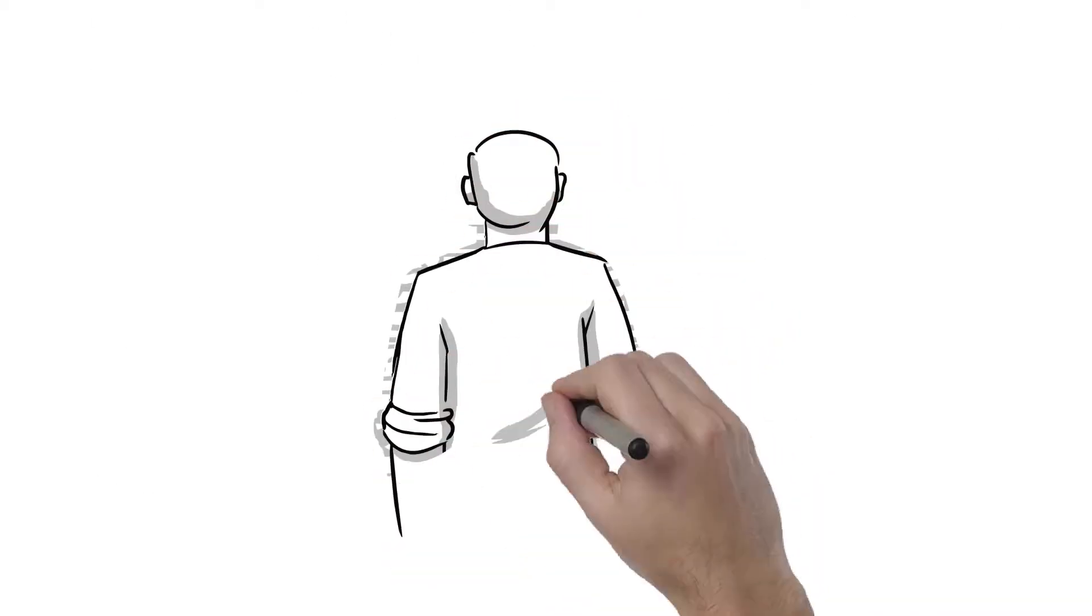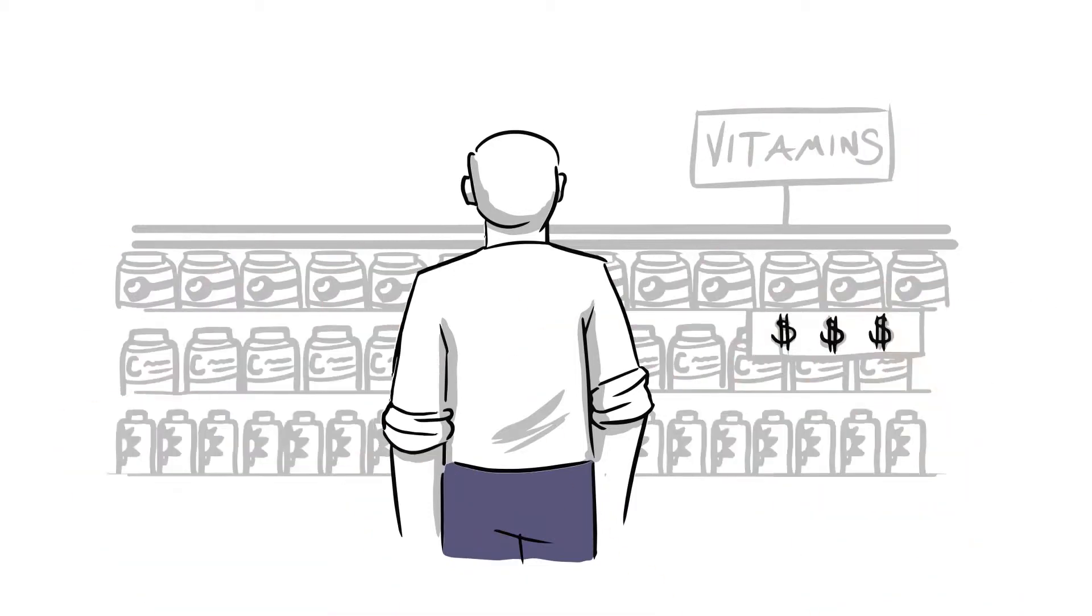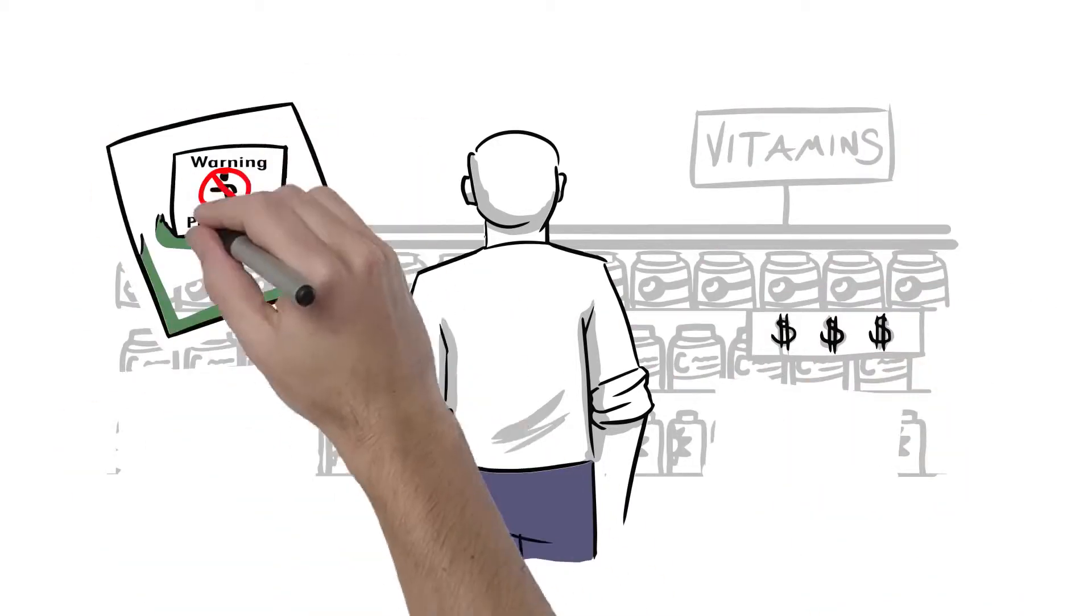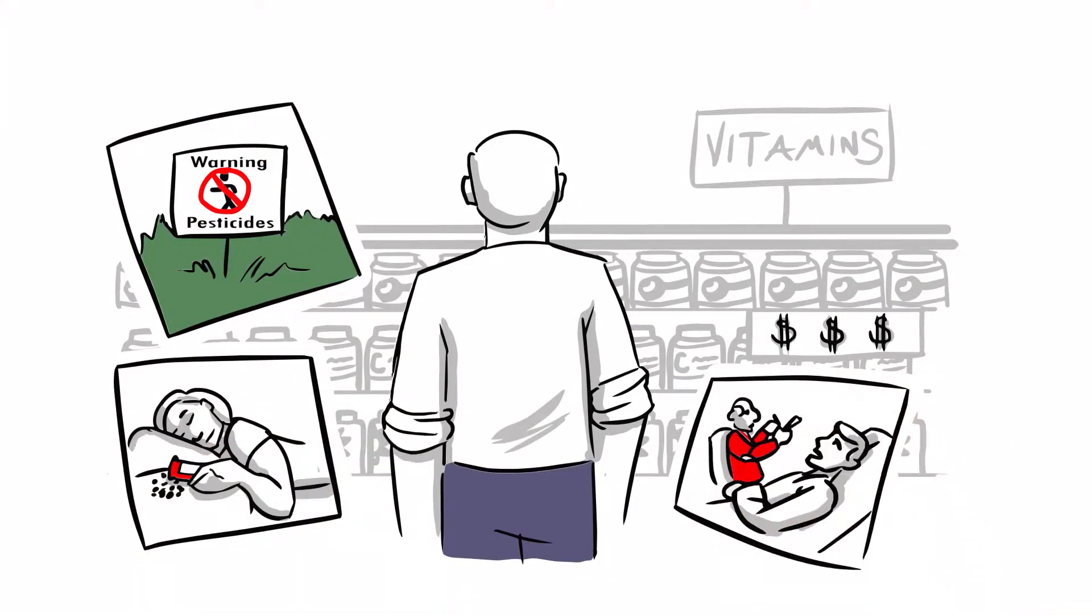You could go to the drugstore or supermarket and buy a cheap synthetic vitamin made by the same drug companies that make sleeping pills, pesticides, and antidepressants.